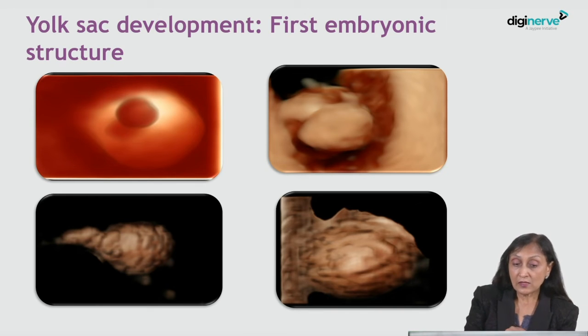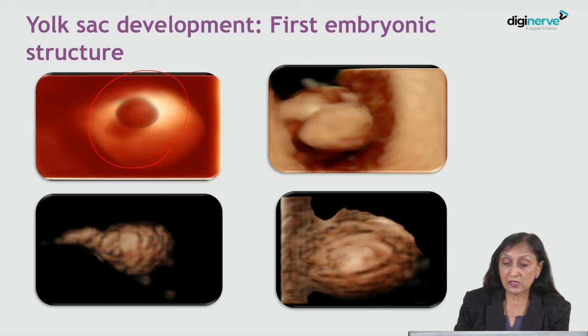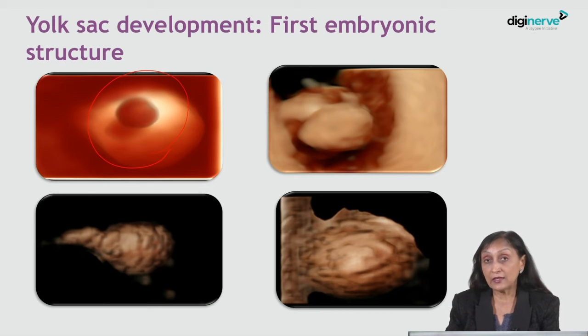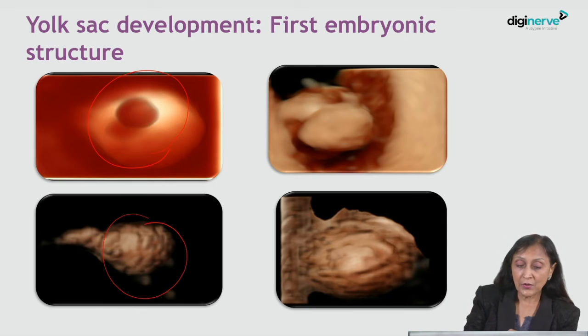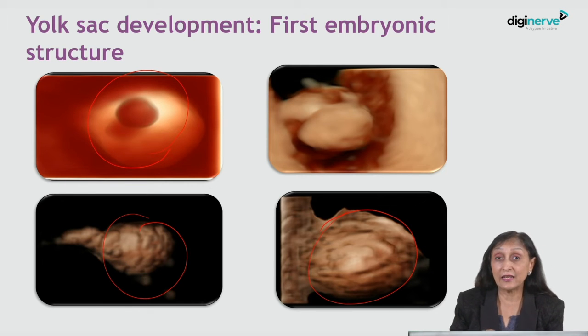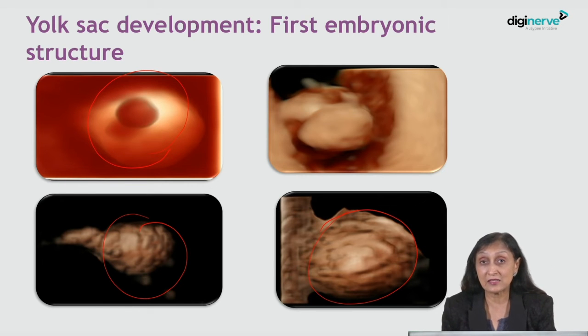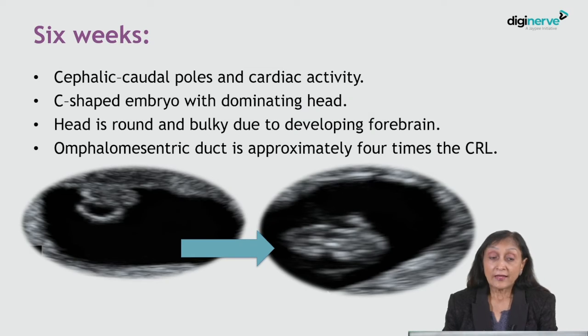At six weeks, the yolk sac appears as a smooth-walled structure. Gradually the surface starts folding and it gives a typical honeycomb appearance in later pregnancy, around 8 to 10 weeks. Absence of a yolk sac is a sign of a blighted ovum.